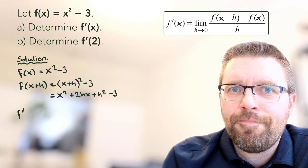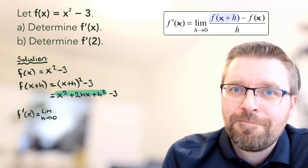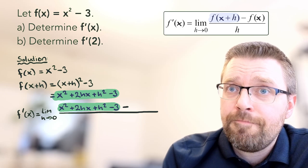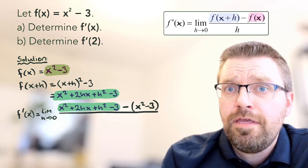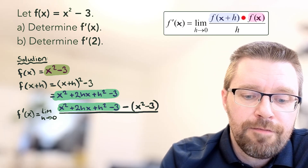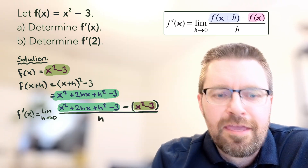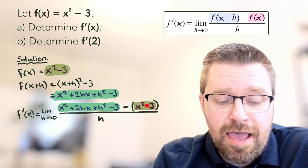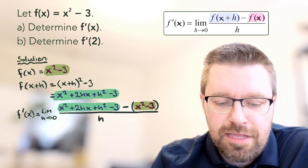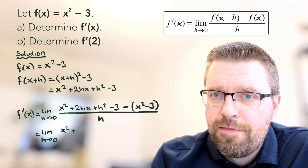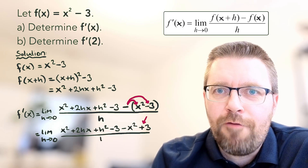Now it's time to put everything inside the formula. I write f prime of x equals limit as h approaches 0. I replace f of x plus h with my expression, then take the minus sign and replace f of x with the original expression inside a parenthesis. The parenthesis is important because the negative sign in the definition works on the whole f of x. So the negative sign before the parenthesis changes the signs inside. Then of course divide everything by h.